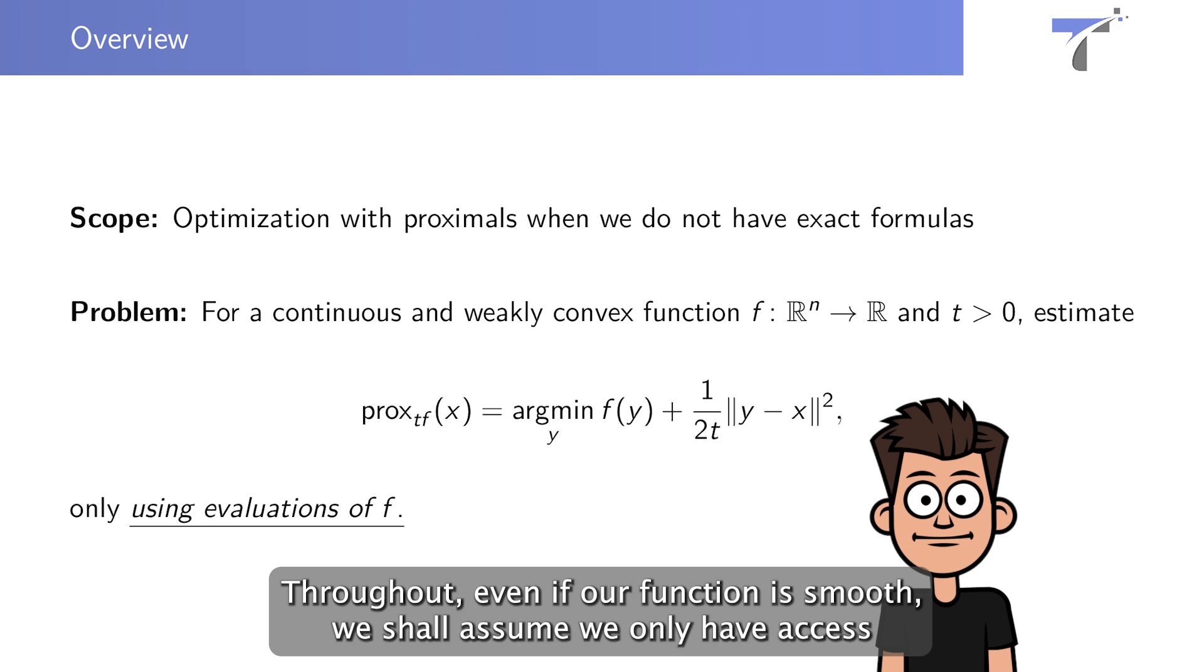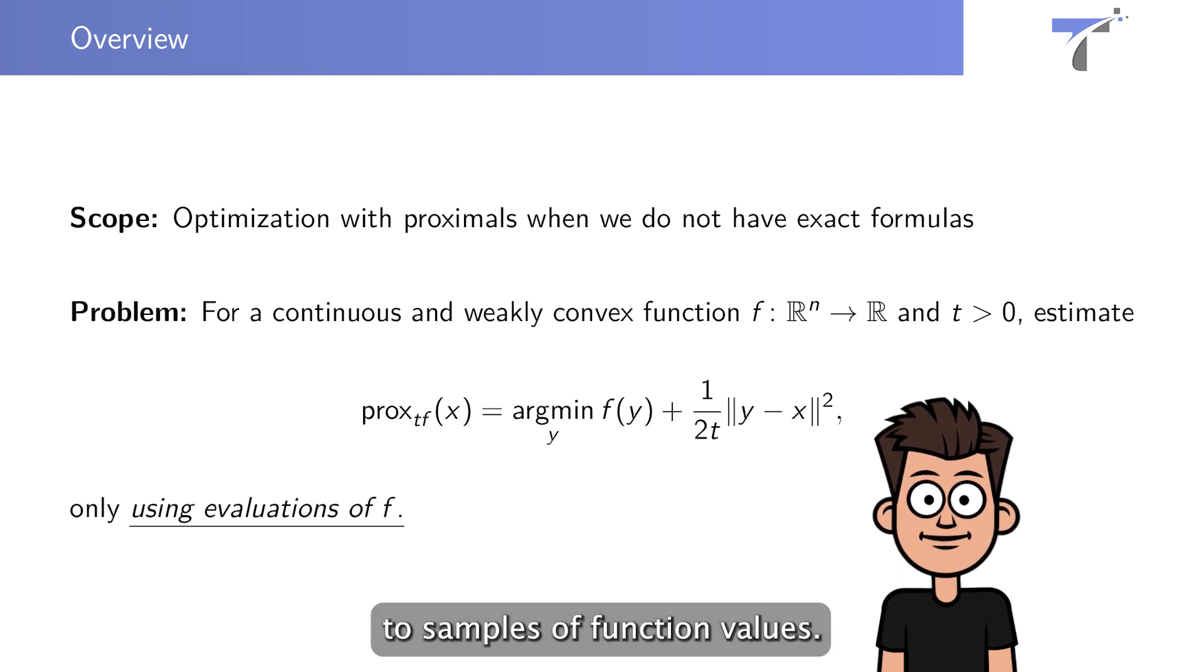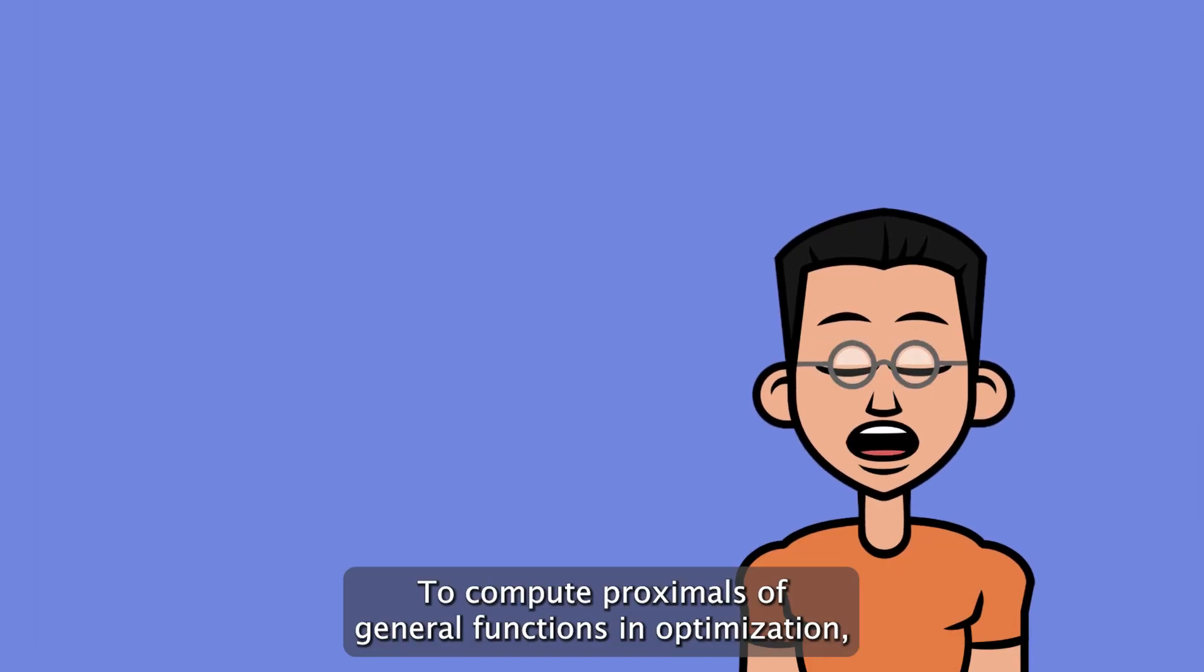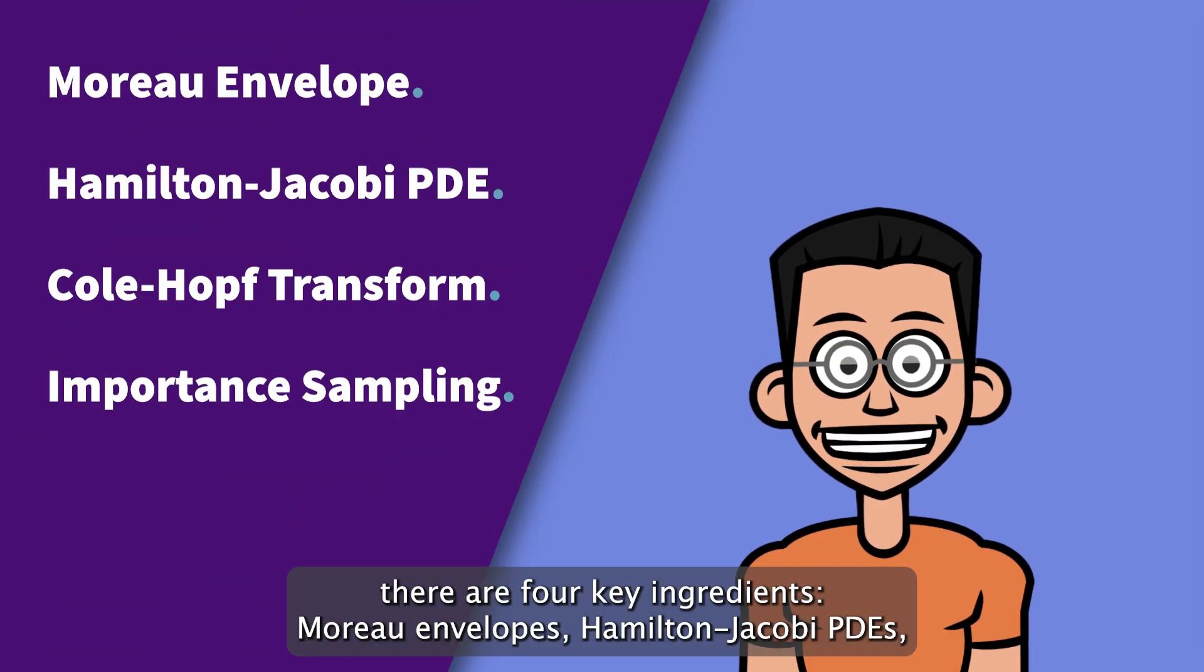Throughout, even if our function is smooth, we shall assume we only have access to samples of function values. To compute proximals of general functions in optimization, there are four key ingredients.